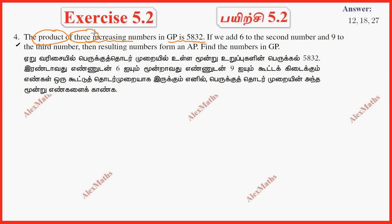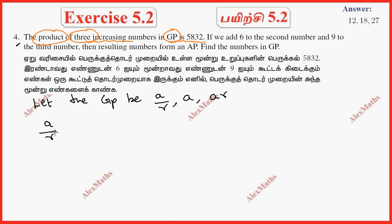The product of 3 terms in GP — we can assume: let the GP terms be A/R, A, and AR. The 2nd term divided by the 1st term and the 3rd term divided by the 2nd term are both equal to R.